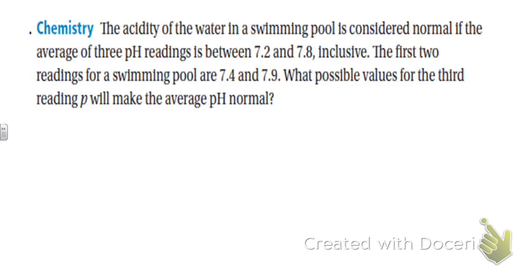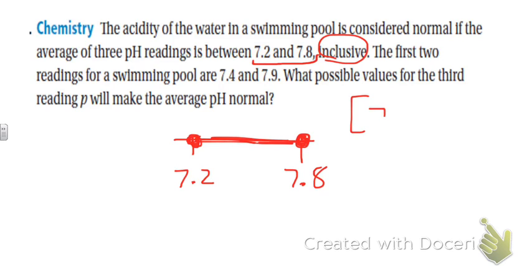Though you need to look for some keywords. The acidity of the water in swimming pools is considered normal if the average of three pH readings is between - that's important - between 7.2 and 7.8, and the word that follows is important: inclusive. That means we're including 7.2 and 7.8 also. It might look like this: 7.2, 7.8, everything in between there. And so it says the average of three of those readings, so an average is you add three numbers together and divide by three.